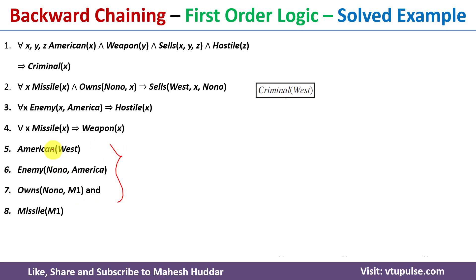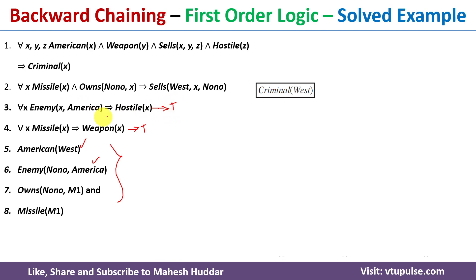Clauses 5, 6, 7, and 8 are the facts. For example, 'American West' means West is American — that is 100% true. Similarly, the sixth statement says Nono is an enemy of America, which is given in the problem definition. So we have four facts. For the first four clauses, such as 'whenever x is a missile, x is a weapon,' the entire statement is true, but individually we don't know about missile or weapon. The same applies to clauses 1 through 3.